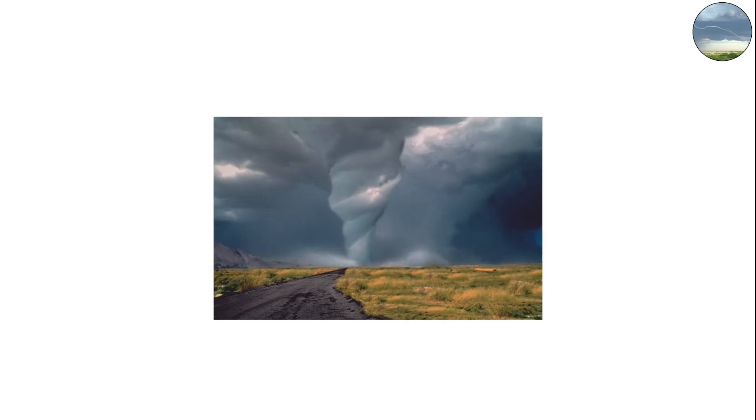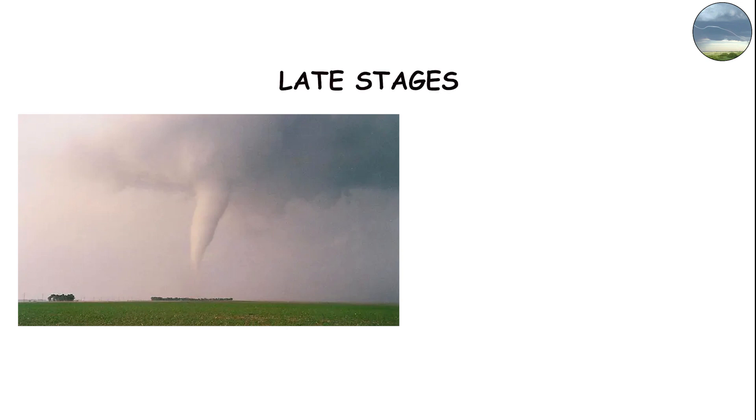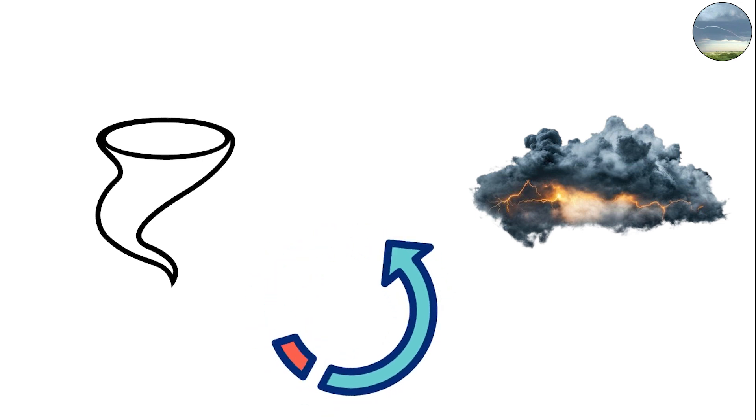Despite their smaller size, they can still cause significant destruction. Rope tornadoes usually appear in the early or late stages of a tornado's life cycle. When a storm is just beginning to spin, the funnel starts small because the rotation hasn't fully strengthened yet.